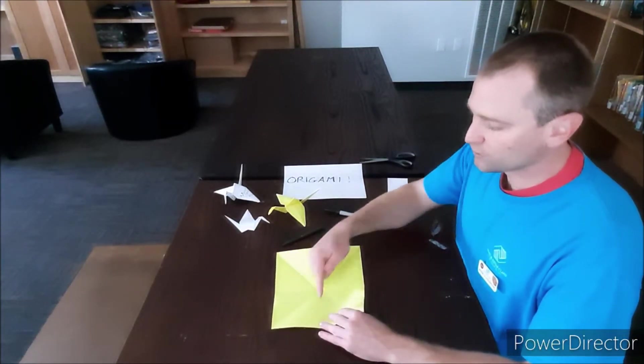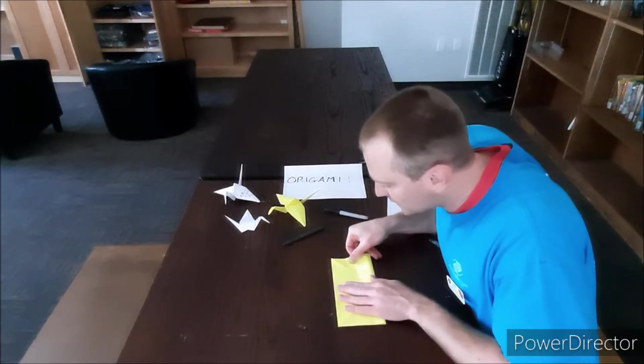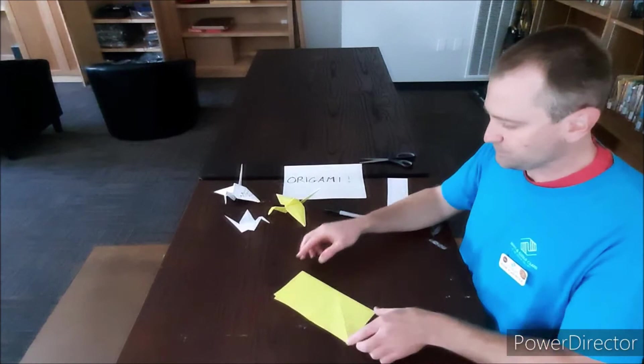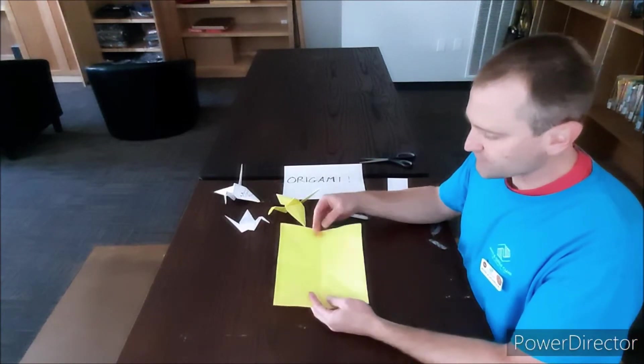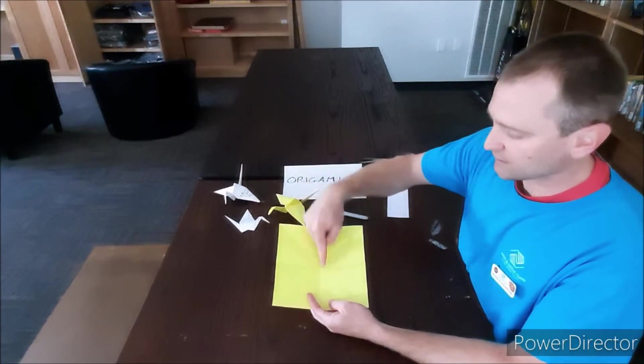So I have one more fold this way. I got to fold it this way so we can get those main lines in here. So when I open it up, I'll have a line this way, a line that way, a line across, and a line that way. Now I'm going to flip this over.